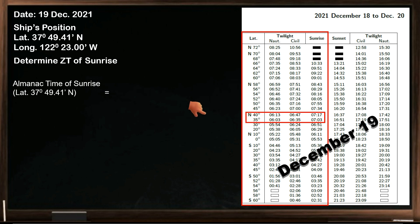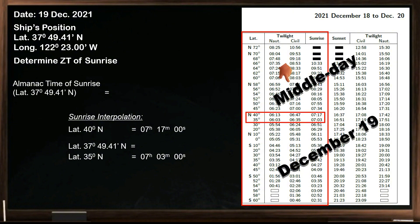So our first step is sunrise interpolation. We need to find the time of sunrise for this latitude. The sunrise for latitude 35 degrees is 07 hours 03 minutes. For latitude 40 degrees, the sunrise is 07 hours 17 minutes. Again, the value in this table is for the middle day, which is on this daily page, December 19th.